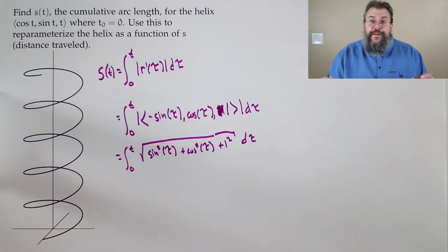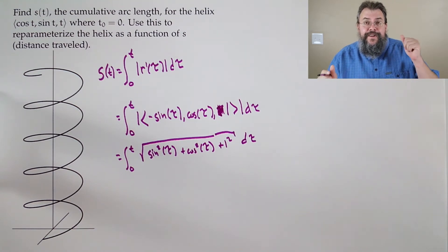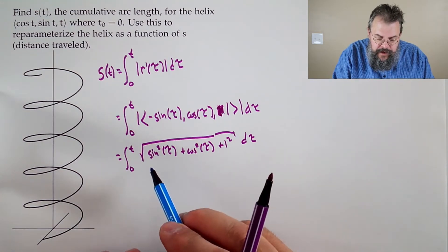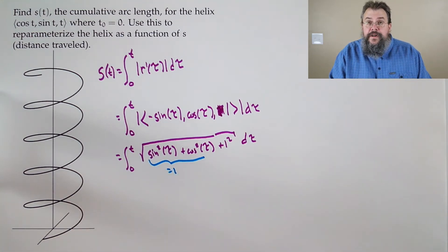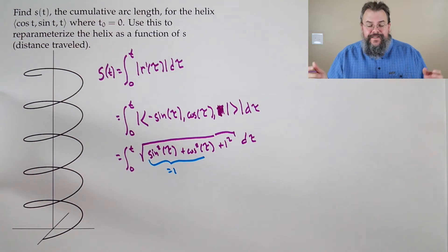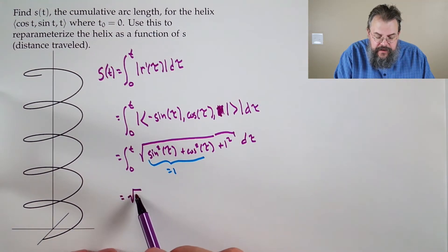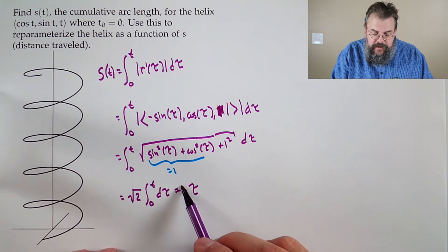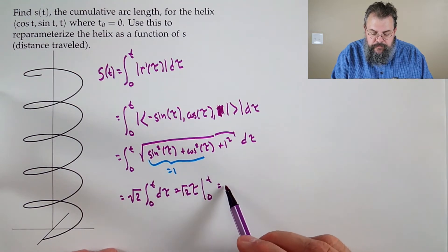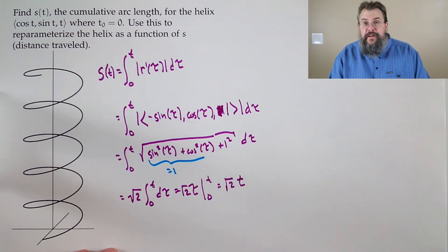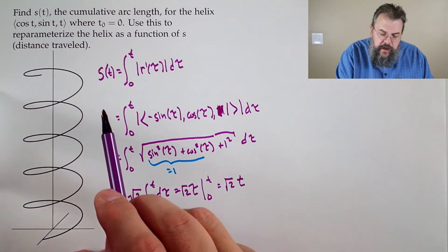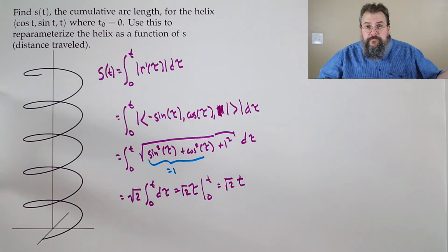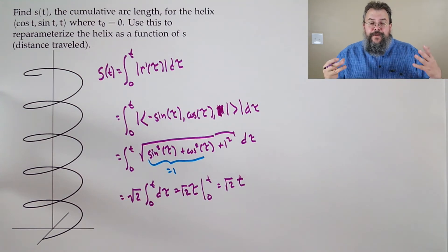Since sin²τ + cos²τ = 1, we have √(1 + 1) = √2 — a constant! So S(t) = √2 ∫₀ᵗ dτ = √2 · t. If we've gone time 10, the distance traveled is 10√2. If we've gone time √2, the distance is 2.